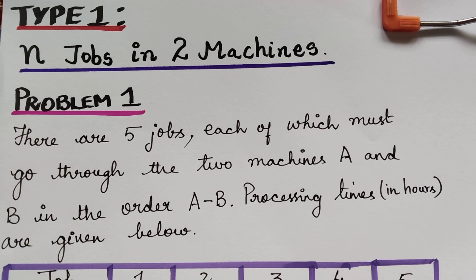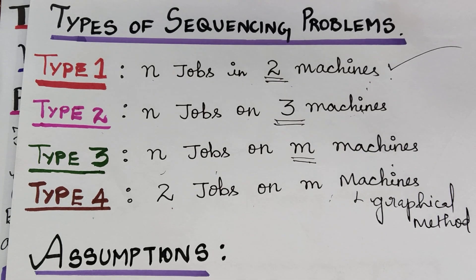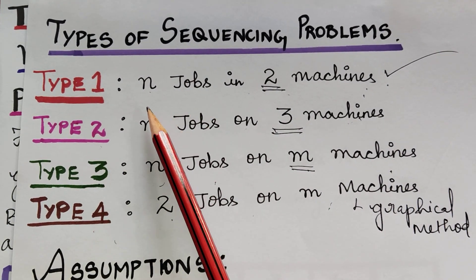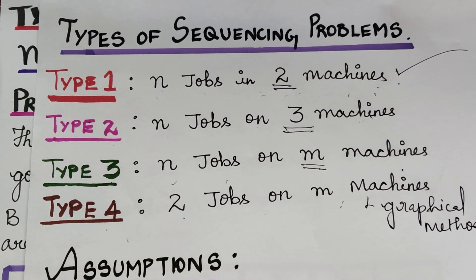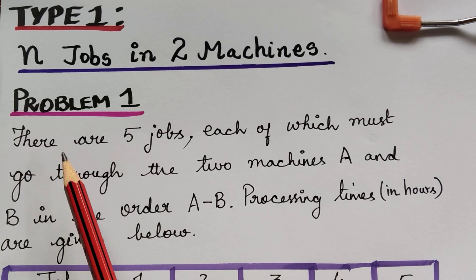Dear students, under the lecture series on sequencing problems, here we have lecture 2. In our previous lecture we learned the basic definitions and terminologies under sequencing problems. We also learned there are four types of sequencing problems, that is type 1 to type 4. Now in this video lecture we are going to learn the first type, that is n jobs in two machines.